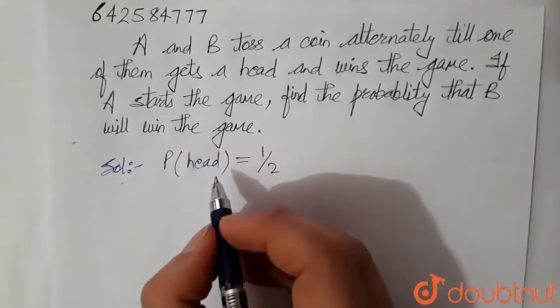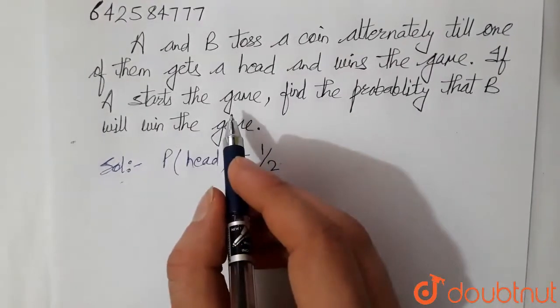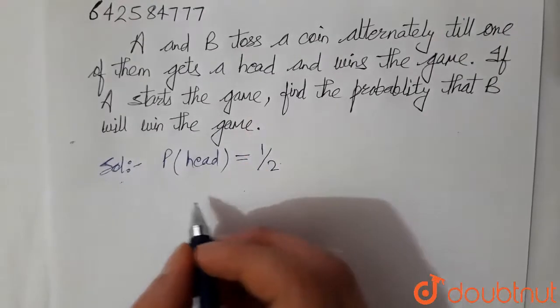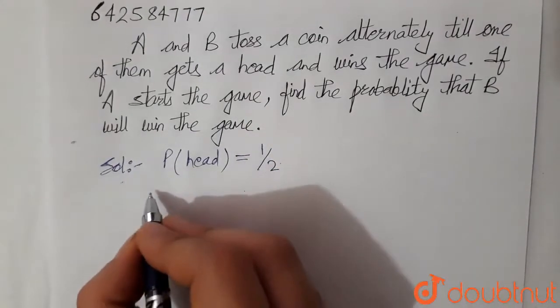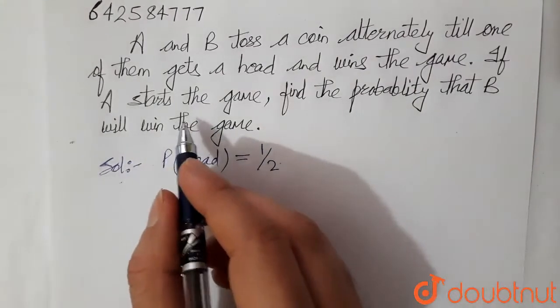Okay, now if A starts the game, then A can win the game in first try also. That probability is 1 by 2. Okay, so first we will calculate the probability of winning of A.